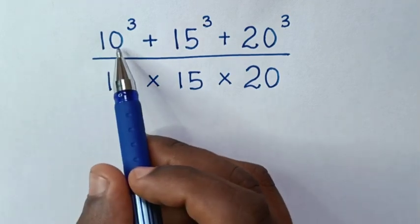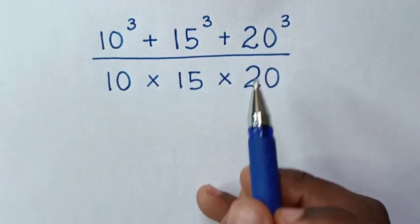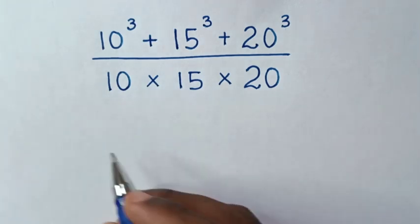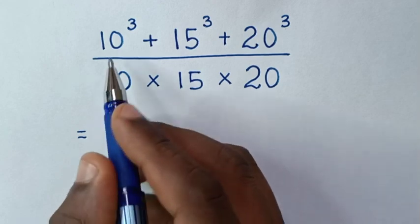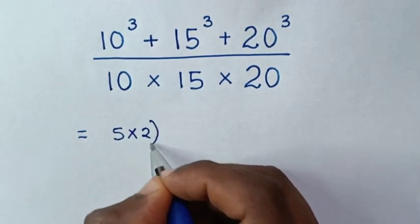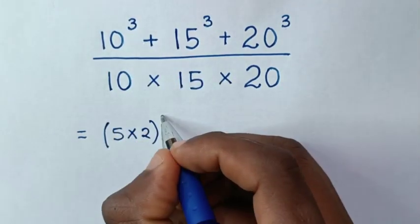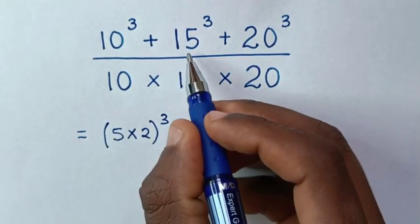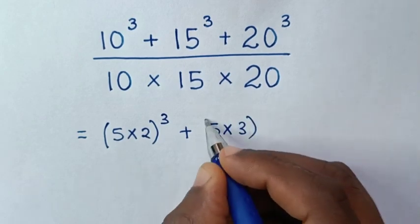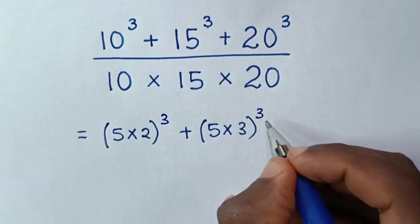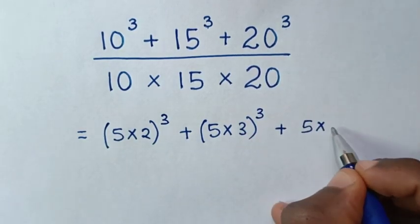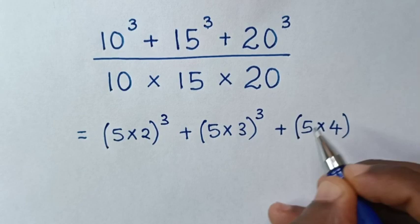So first, in this 10, 15, 20 — also 10, 15, 20 is divisible by 5. So it will be equal to: 10 is the same as 5 times 2, bracket power of 3, then plus 15 is the same as 5 times 3, bracket power of 3, then plus 20 is the same as 5 times 4, bracket power of 3.